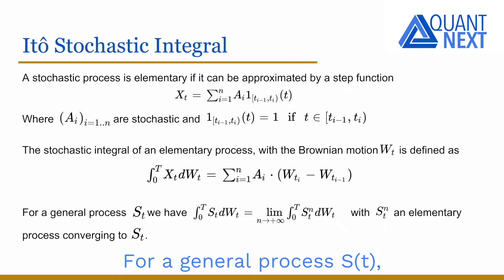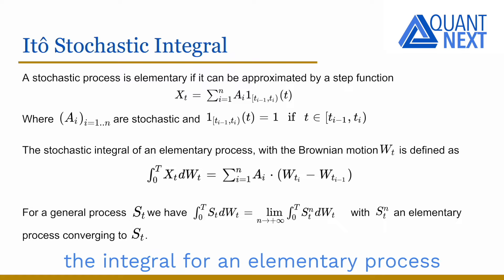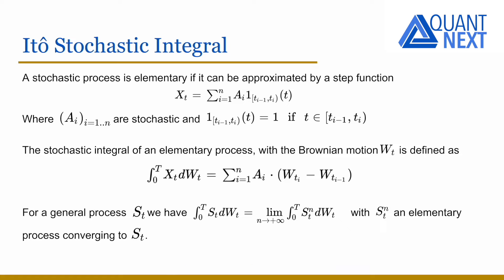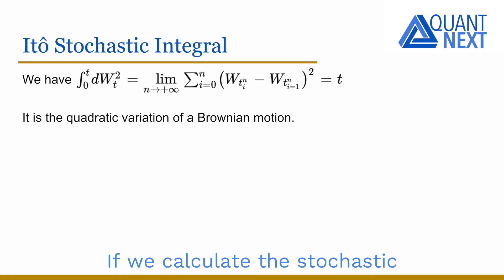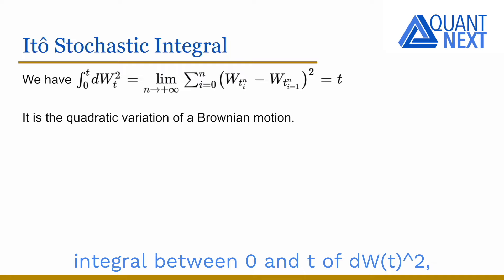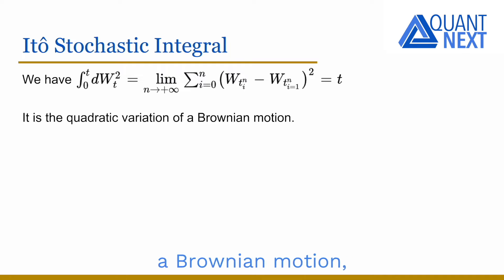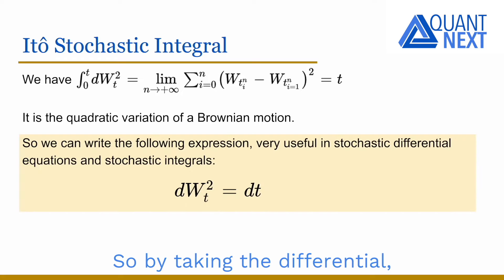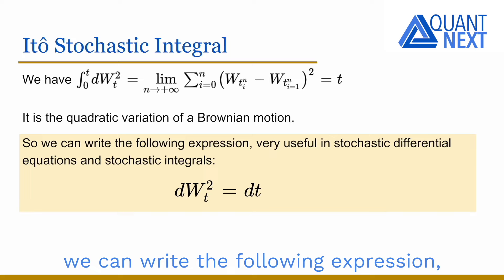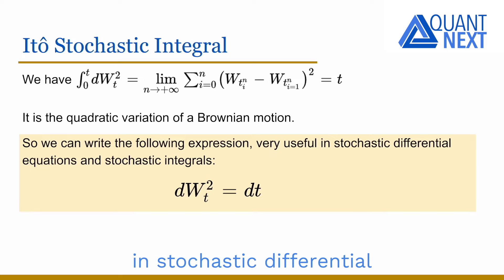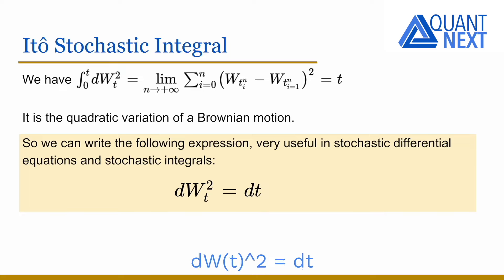For a general process S_t, the stochastic integral is defined as the limit of the integral for an elementary process converging to S. If we calculate the stochastic integral between 0 and t of the square of dW_t, we find the quadratic variation of a Brownian motion, which is equal to t. So by taking the differential, we get the useful expression: the square of dW_t is equal to dt.